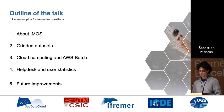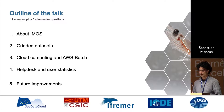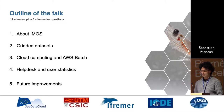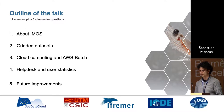So the outline of the talk: we'll be talking very briefly about IMOS because most of you know about it, the grid dataset that we are offering right now via the new architecture that we've implemented using cloud computing and AWS Batch, some time to talk about the monitoring and user statistics since the beginning of the implementation of the tool, and then some ideas for future improvement.